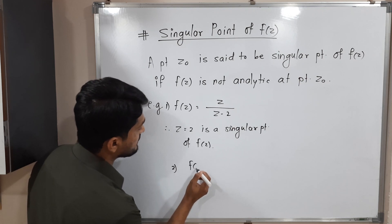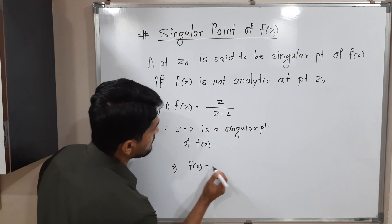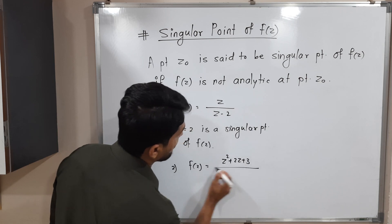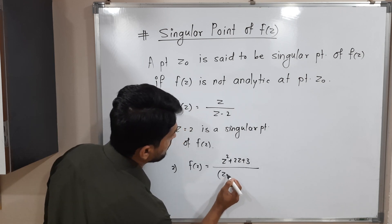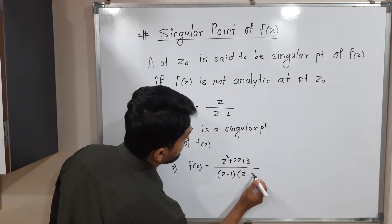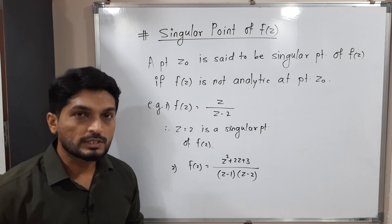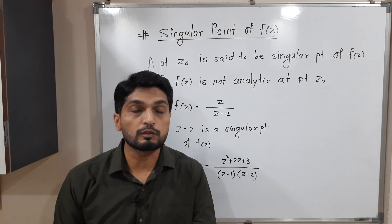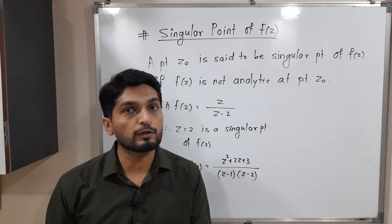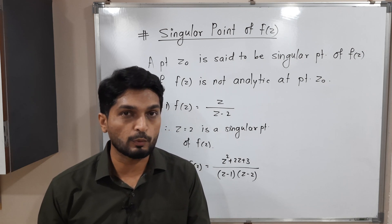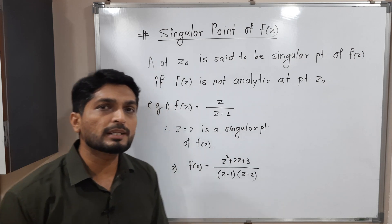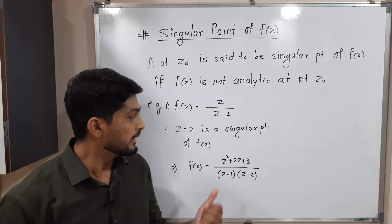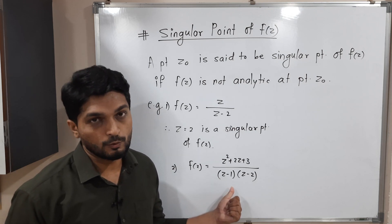Let us discuss the second example. f of z is equal to z squared plus 2z plus 3 upon z minus 1, z minus 2. This is the given function and we have to find a point where the function is not analytic — that means we have to find the singular points. What will be the singular points? For what values of z will the denominator be 0?